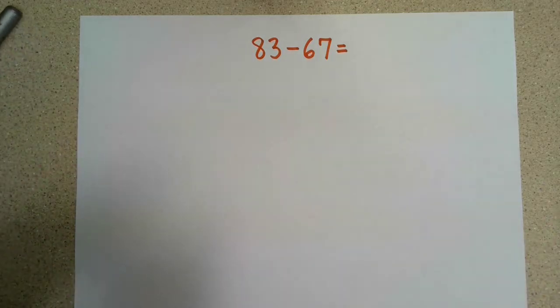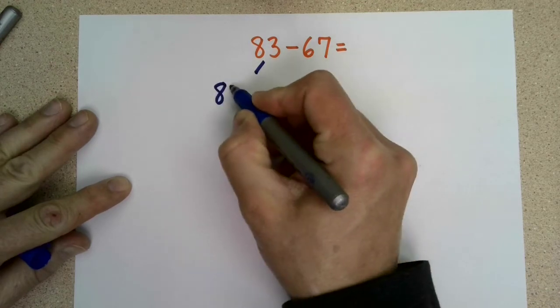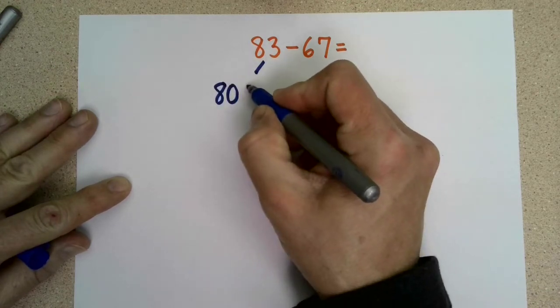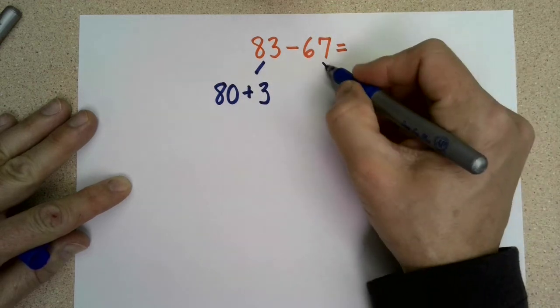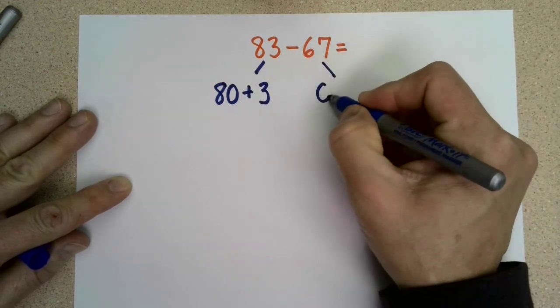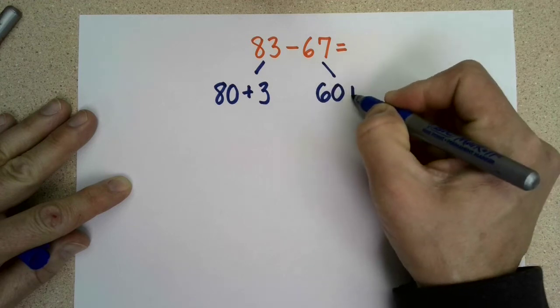Separate both numbers in expanded form. So 83 would be equal to 80 plus 3, and 67 would be equal to 60 plus 7.